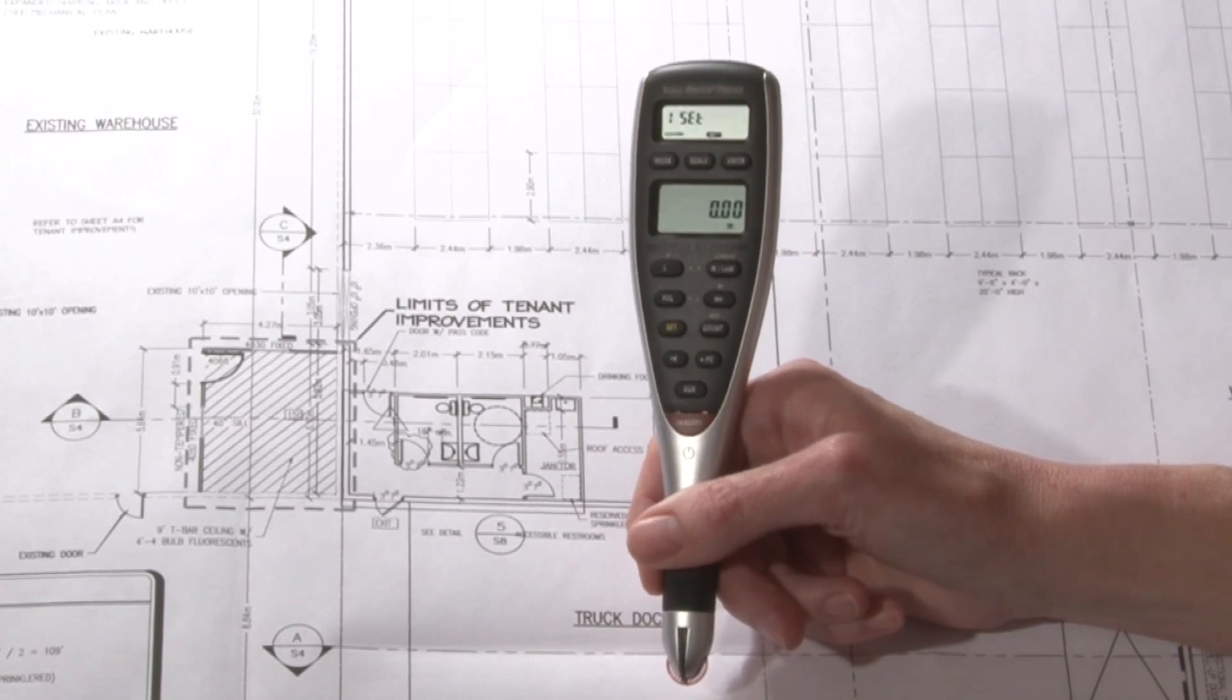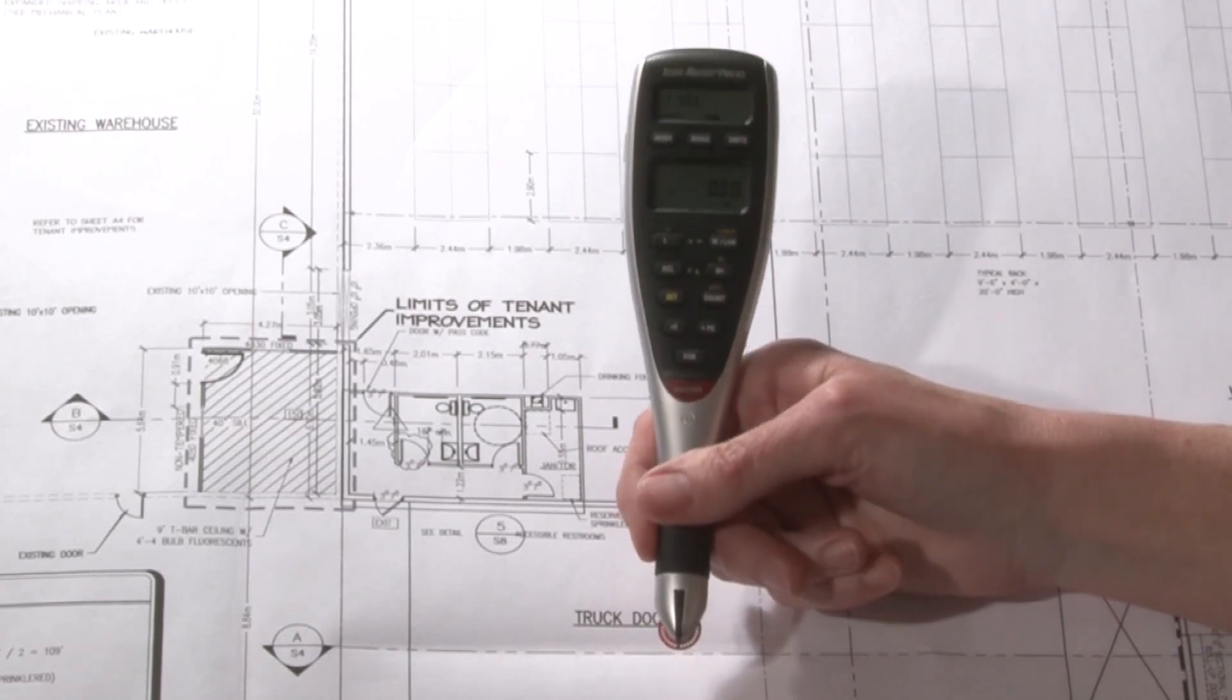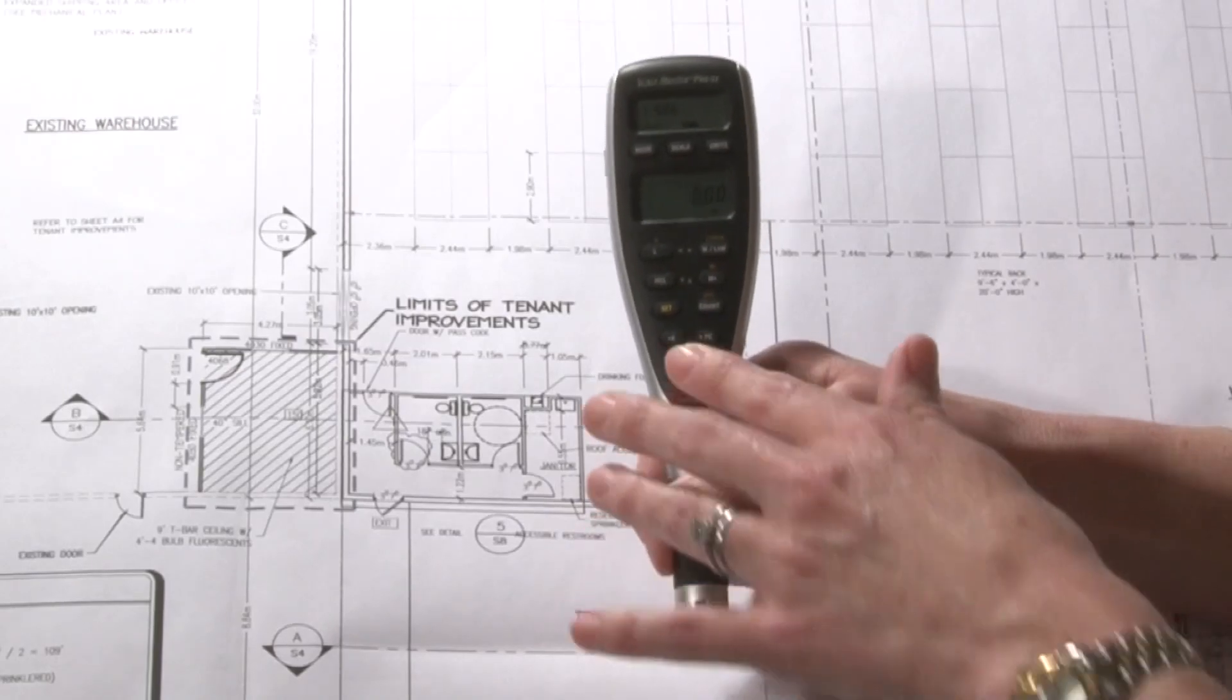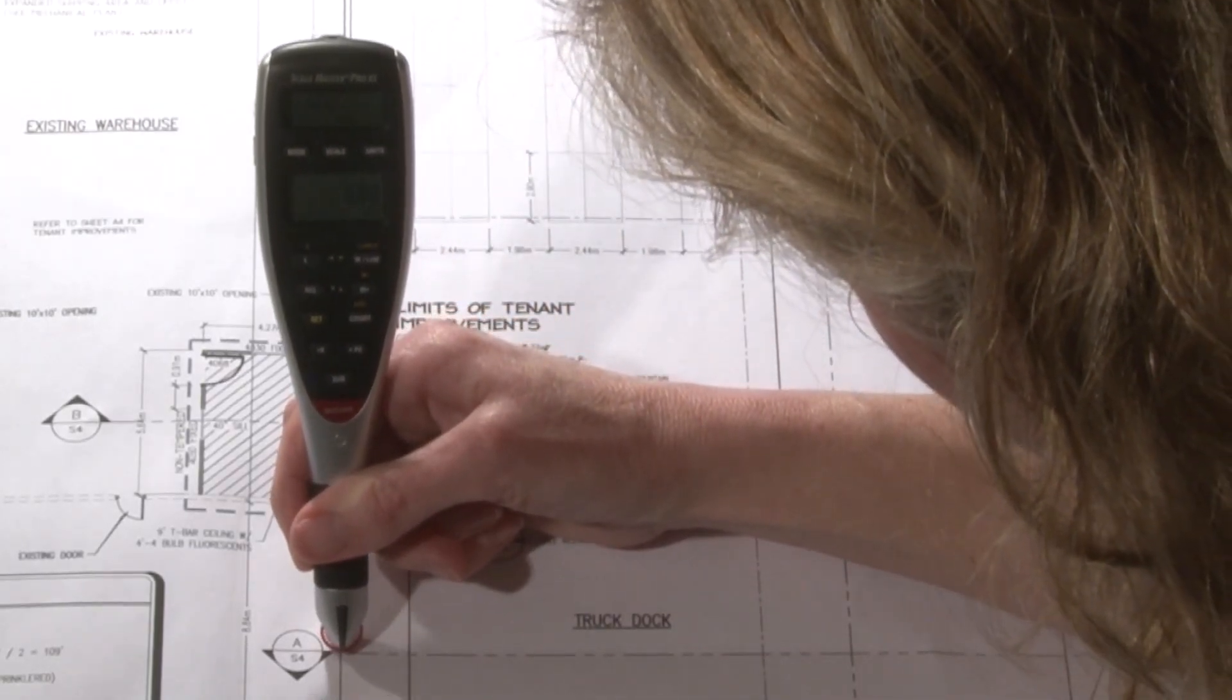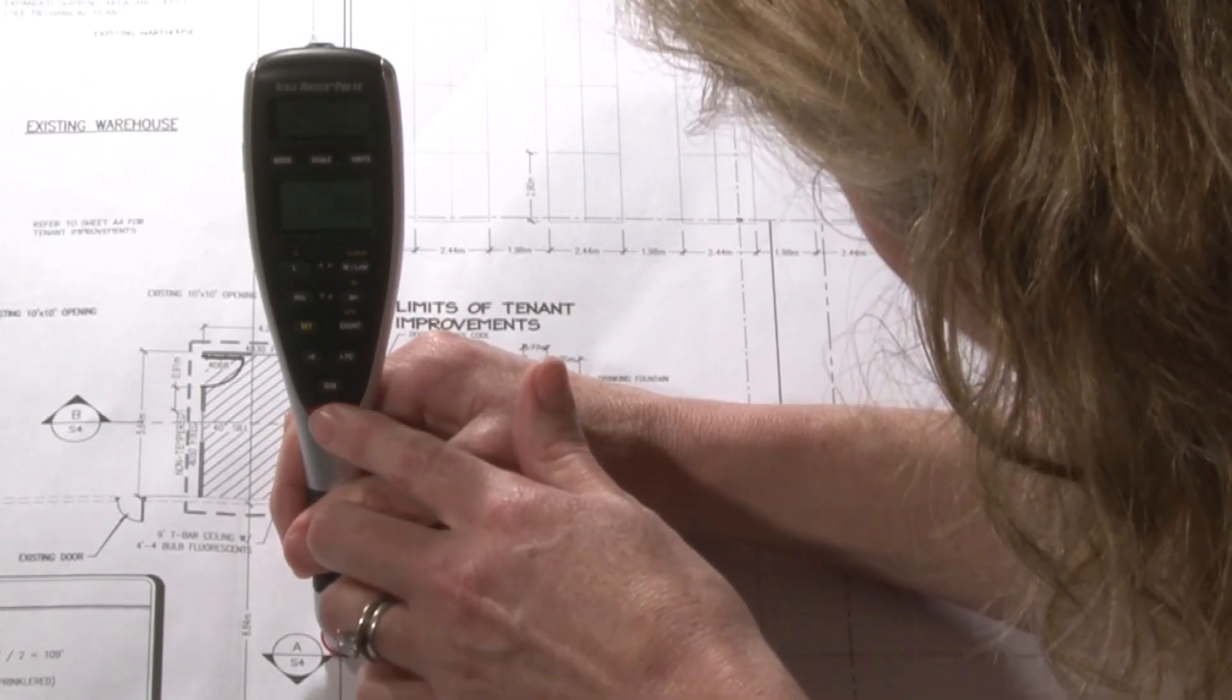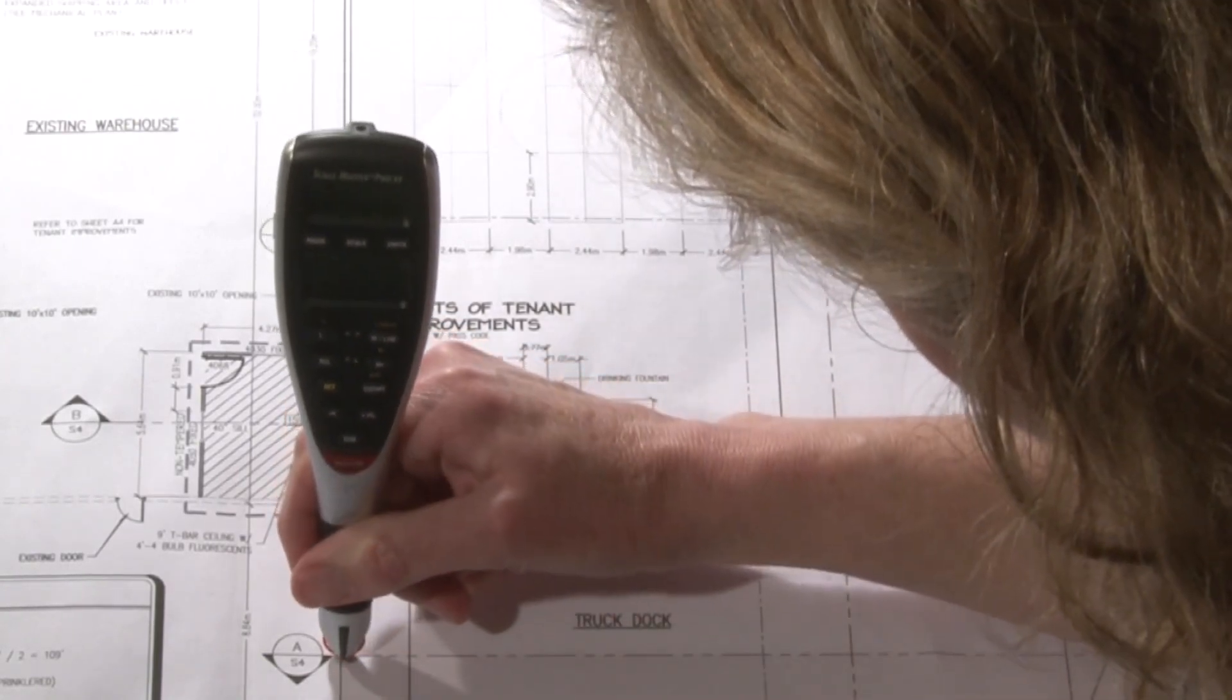Now what I like to do is confirm my measurement with a reroll. I simply clear the unit, line up in the same space I was before, make sure that's on zero, and roll.